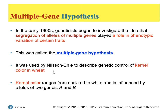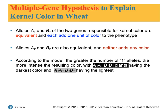Particular credit goes to a scientist named Nilsson-Eel, who performed genetic analysis on wheat and the color of their kernels. The color ranged from dark red to white, and appeared to be influenced by the alleles of two genes called A and B. The number-one alleles — A1 and B1 — conferred color on the kernel in equivalent amounts, so he attributed a unit of one to each. The other alleles, A2 and B2, were equivalent to each other but neither added any color, so he awarded those alleles zero points each.